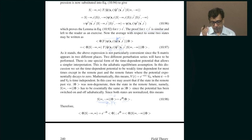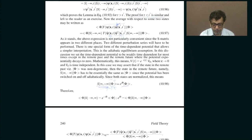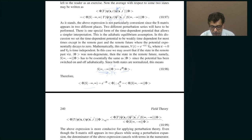This is the final state, which is the same as the initial state. Therefore they differ at worst by some complex number of unit modulus. So it is clear that the conjugate is this, and therefore e^{iθ} is trivially equal to the expectation value of the S-matrix.